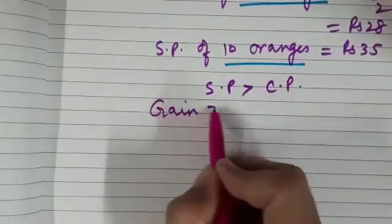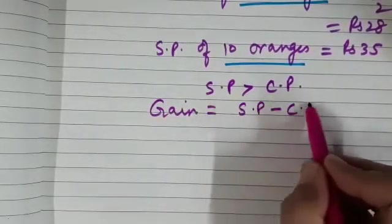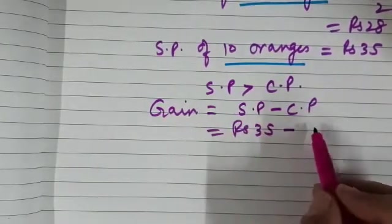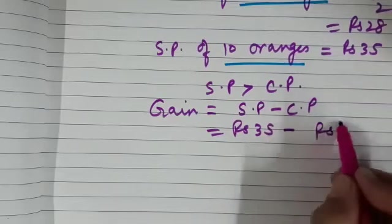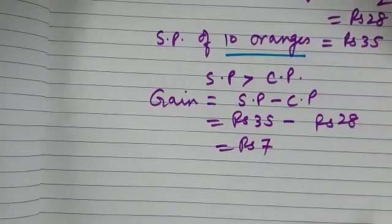How do you calculate gain? Gain is selling price minus cost price, that is rupees 35 minus rupees 28. It gives us rupees 7, so there is a profit of rupees 7 in this situation.